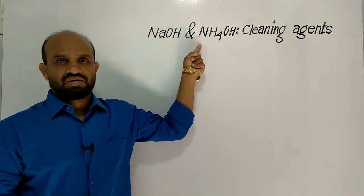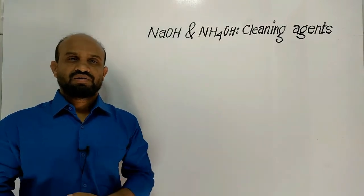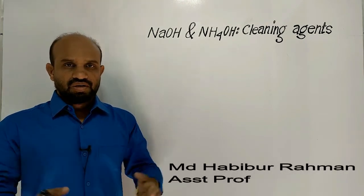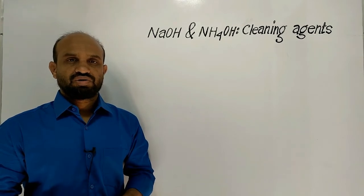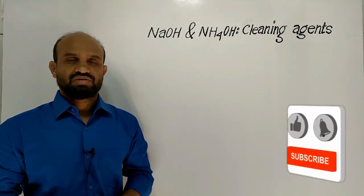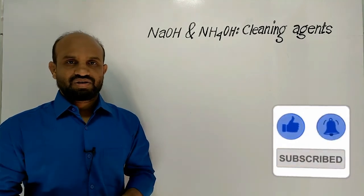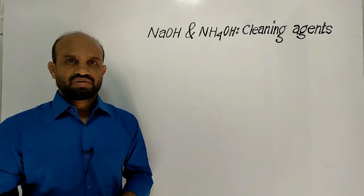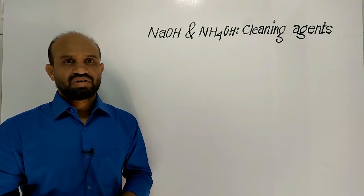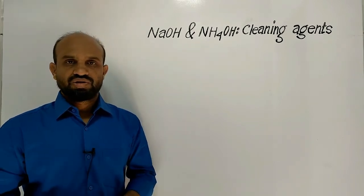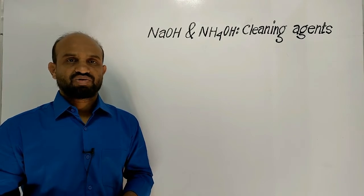Sodium hydroxide and ammonium hydroxide — both chemicals are used as cleaning agents. In this lesson we are going to learn which one functions properly in which case. Caustic soda, that means sodium hydroxide, is used in toilet bowl cleaner, and ammonia solution, that means ammonium hydroxide, is used in glass cleaner.